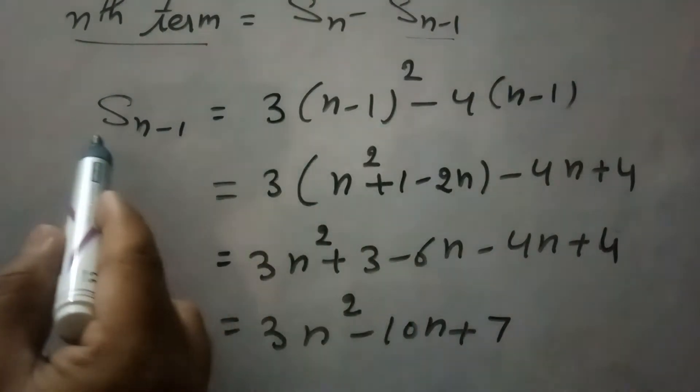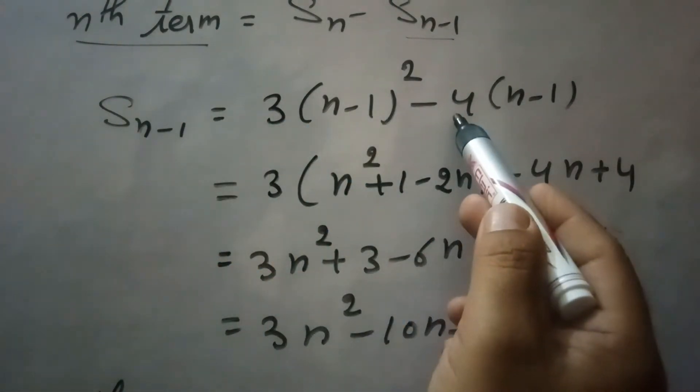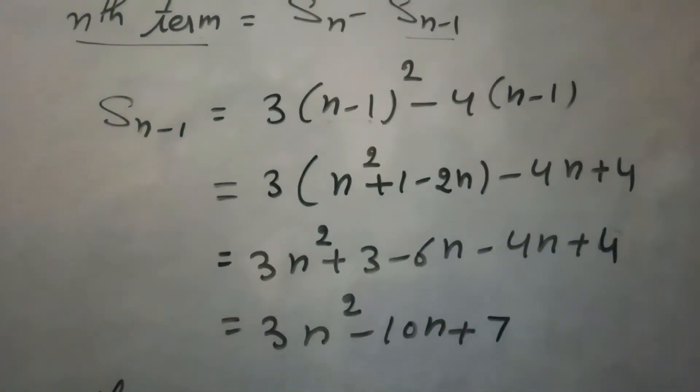Now S(n-1) equals 3(n-1)² minus 4(n-1). Expanding this square, (n-1)² is n² + 1 - 2n, and multiplying inside gives 4n plus 4.